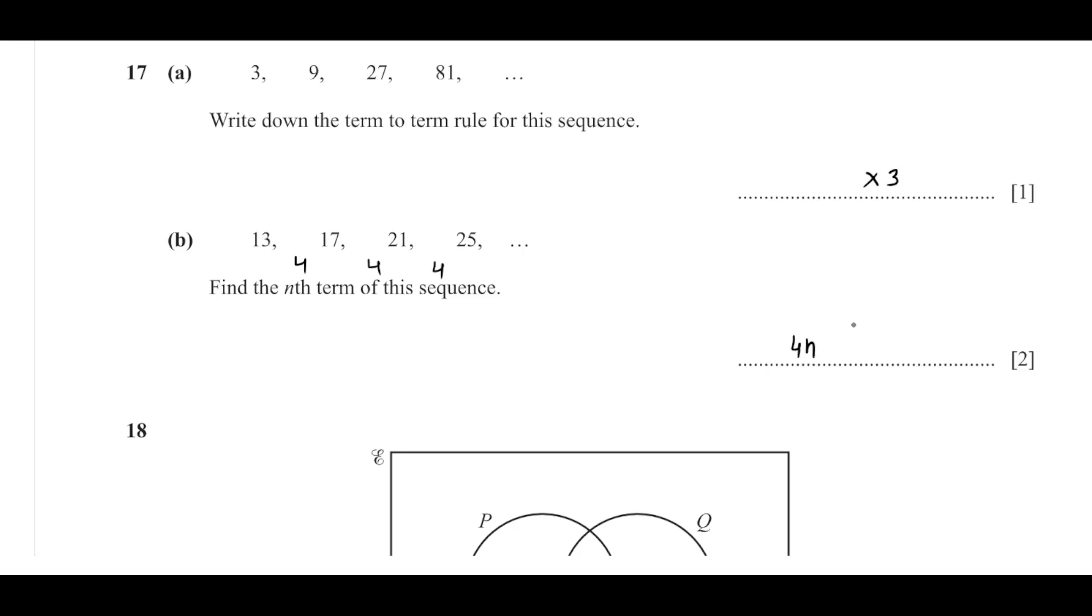Now if I consider 4 times n, my first term will be 4 times 1, which is 4. So from this 13, I will subtract 4, which gives 9. So 4n plus 9 is the rule.